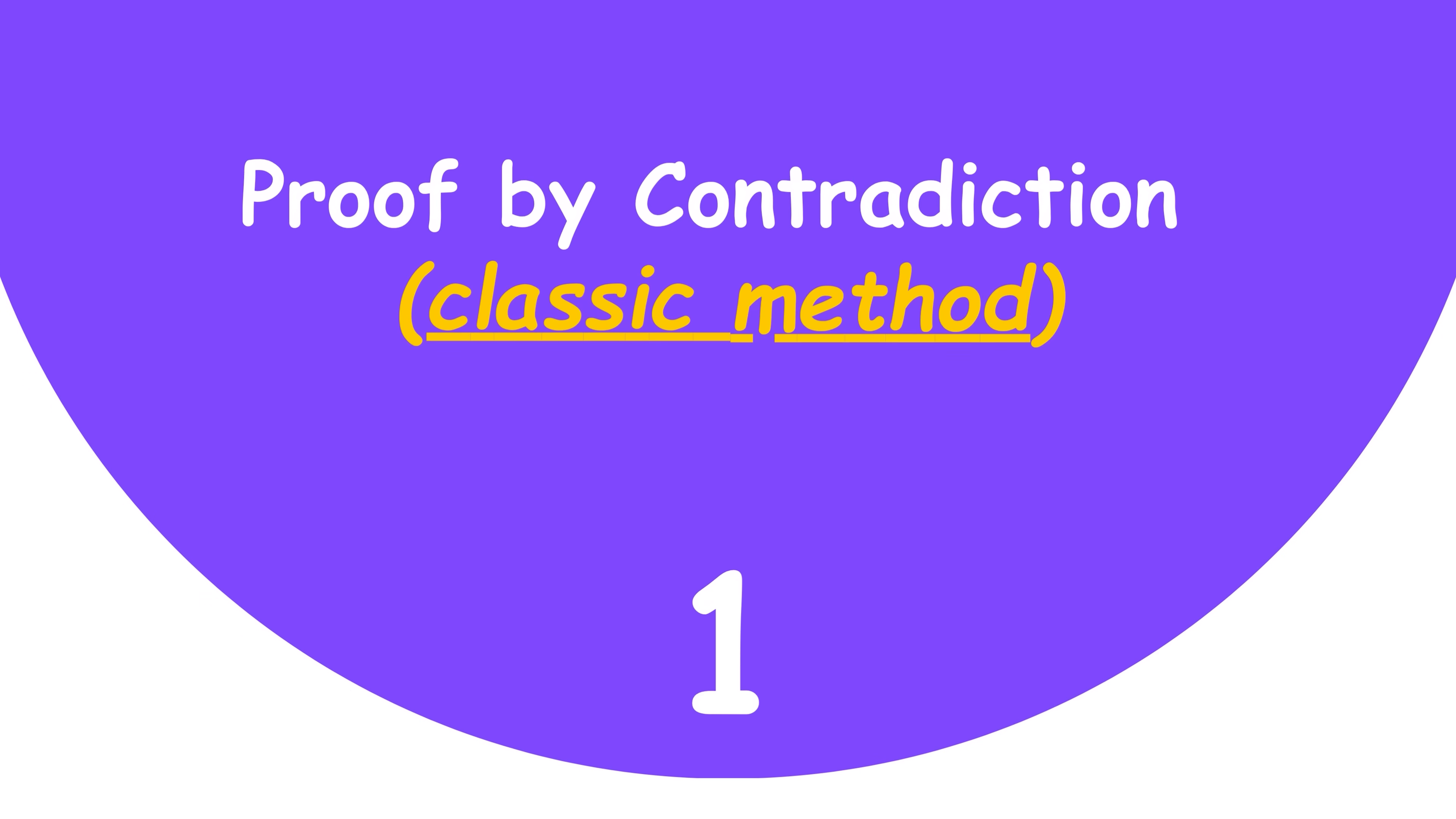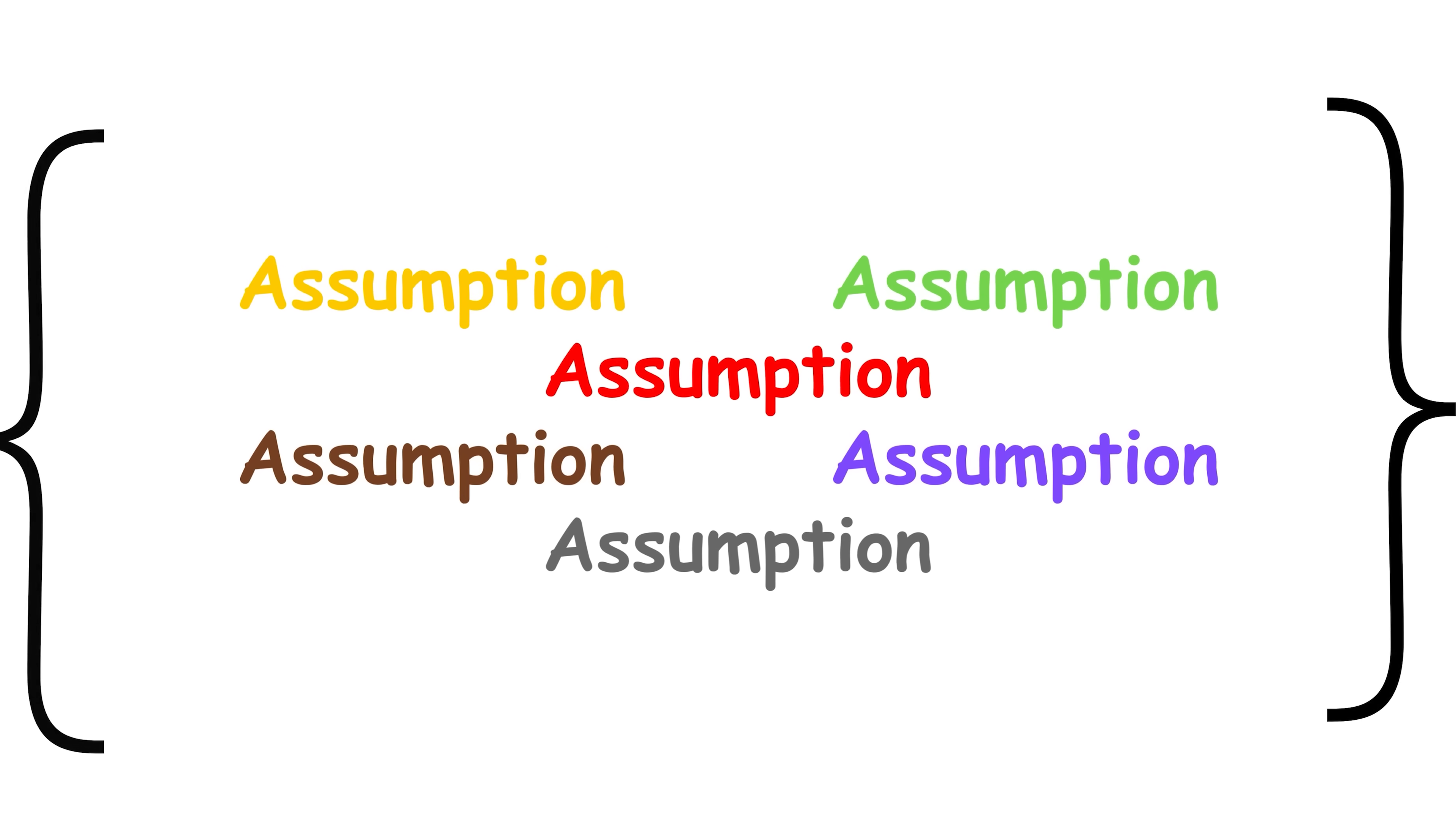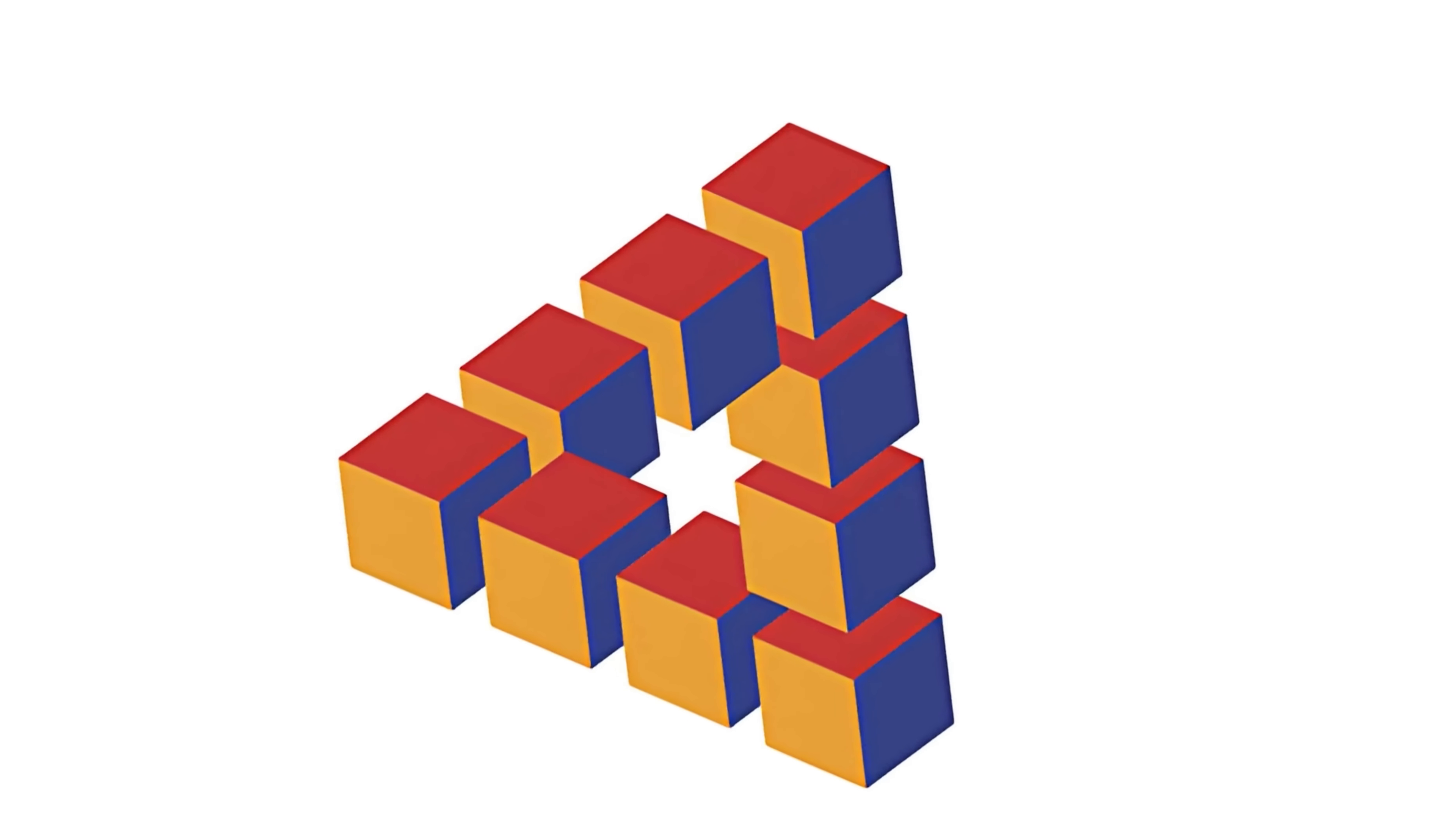Number 1: Proof by Contradiction, Classic Method. We'll start with a method called proof by contradiction. We begin with a set of assumptions, then show that if those assumptions are true, they must lead to an impossible conclusion. When this happens, it shows that the set of assumptions we began with must be wrong, achieving the desired result.